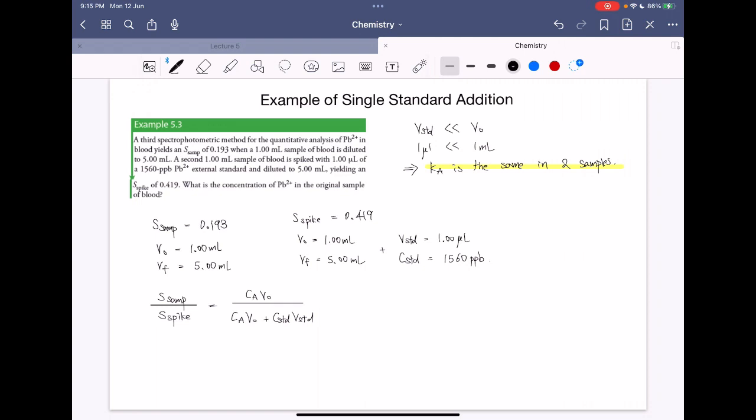The CA is the same in two samples. So go ahead and plug in the values. S sample will be 0.193, the S spike is 0.419.